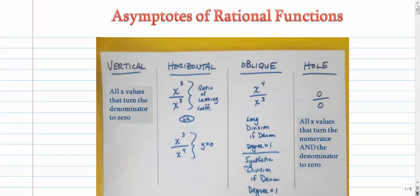I'm going to go through a rather lengthy video on rational function asymptotes. We basically have three types of asymptotes: vertical, horizontal, and slanted, which we'll call oblique.